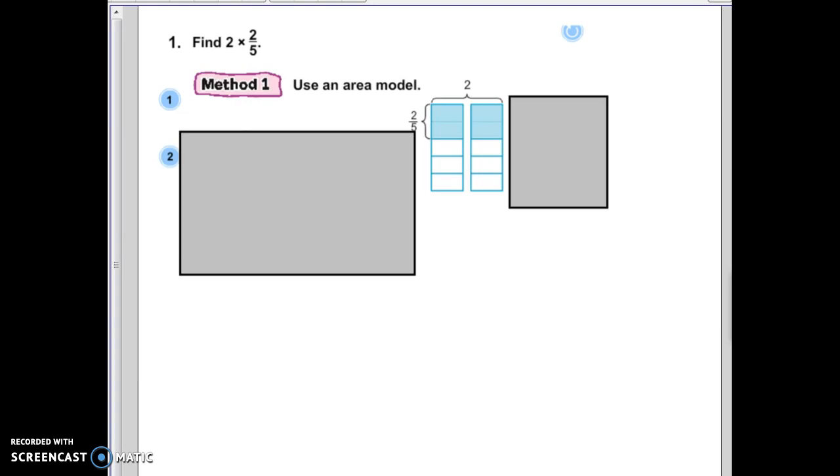So, the modeling behind it, so you can see visual representation. If you ever see a problem like 2 times 2 fifths, a whole number times a fraction, think of the 2 standing for 2 columns. Think of your fraction talking about how much of each column is shaded.